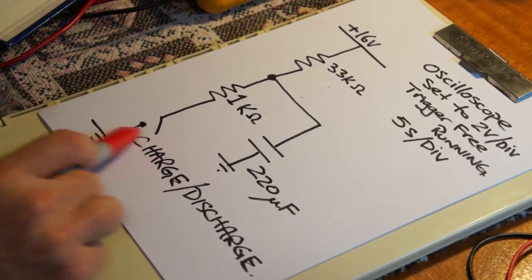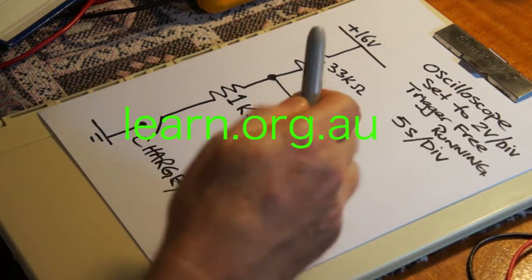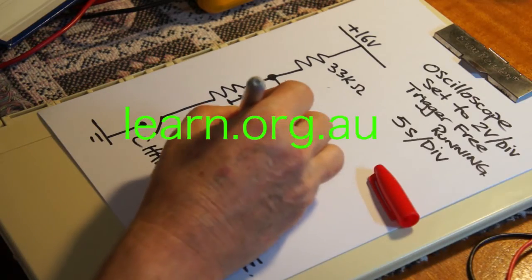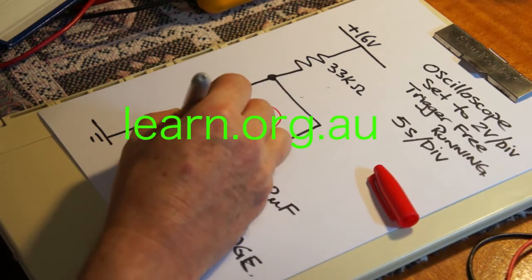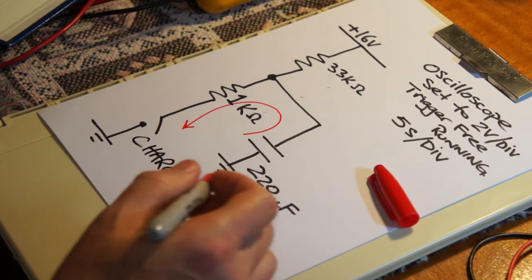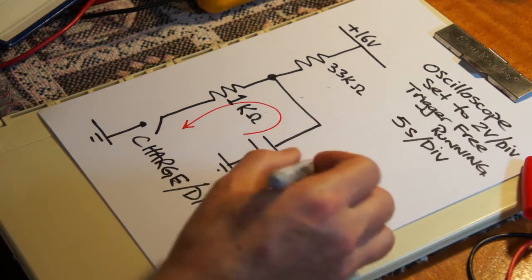When we close the switch, we discharge the capacitor. And discharging that capacitor through this closed switch results in a very short discharge time.